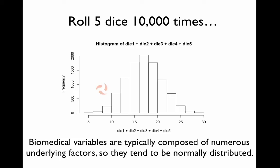This histogram shows the result of a simulation where five dice were rolled 10,000 times. This demonstrates that adding multiple factors that independently follow a uniform distribution will result in a normally distributed sum. This is an empirical demonstration of this fact, rather than a rigorous mathematical proof. The connection between this idea and biomedical experiments is that many quantities measured in biomedical experiments are a summation of numerous underlying factors and so tend to be normally distributed.